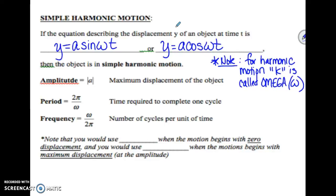They could also give us information about our period in terms of frequency. Frequency is the number of cycles per unit of time. Time required to complete one cycle and number of cycles per unit of time are reciprocals of each other, so period is 2 pi over omega and frequency is omega over 2 pi — the reciprocal of period.